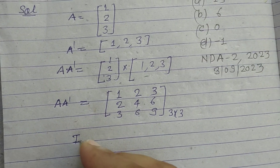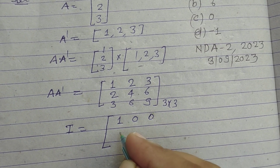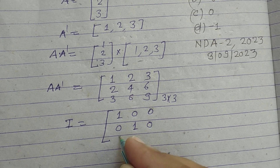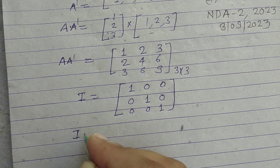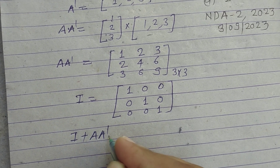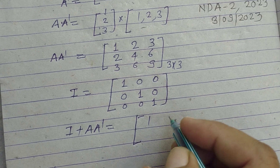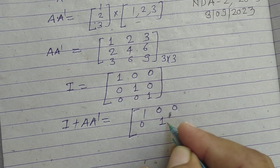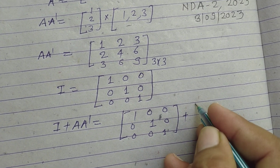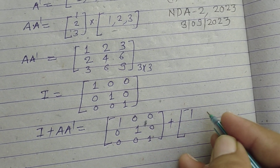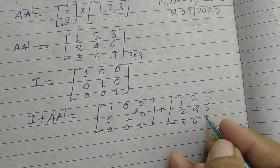The identity matrix is also a 3 by 3 matrix: [1,0,0 / 0,1,0 / 0,0,1]. Student, first we add these — I plus AA dash equals the identity matrix plus the matrix [1,2,3 / 2,4,6 / 3,6,9].